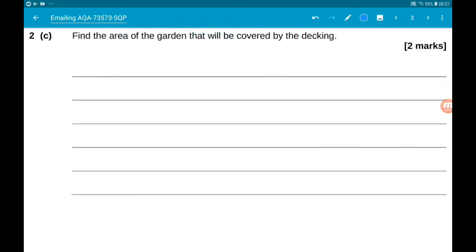Okay, now for the final part, we want to find the area of the garden that will be covered by the decking. So area of sector. Now there is a formula for area of a sector. It's half r squared theta.